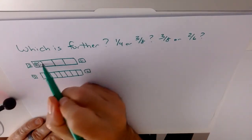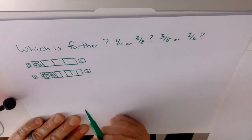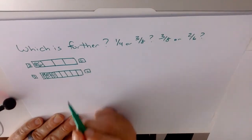So you can fill in your 1 quarter, you can fill in your 1, 2, 3 eighths, and you can see that the 3 eighths is a little bit further.